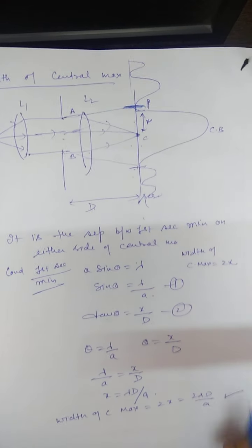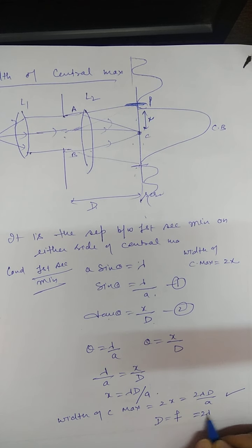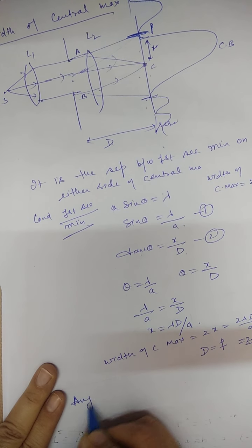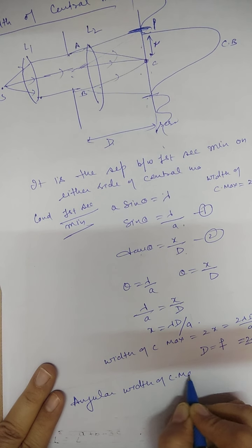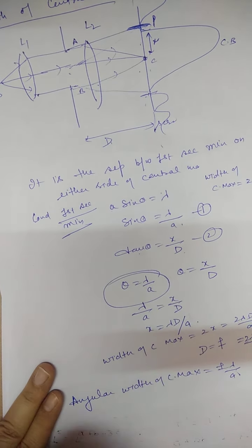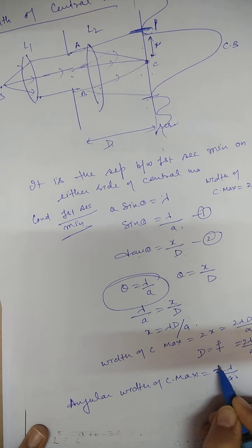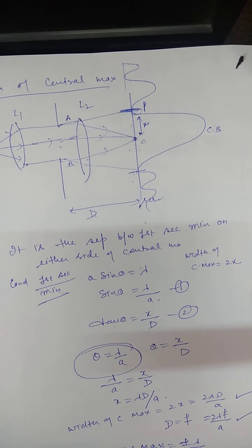If the lens is very close to the slit, the screen is placed at the focal point, so we can replace D with focal length f: width = 2λf/a. The angular width of central maxima is ±λ/a — positive in the upward direction and negative in the downward direction.